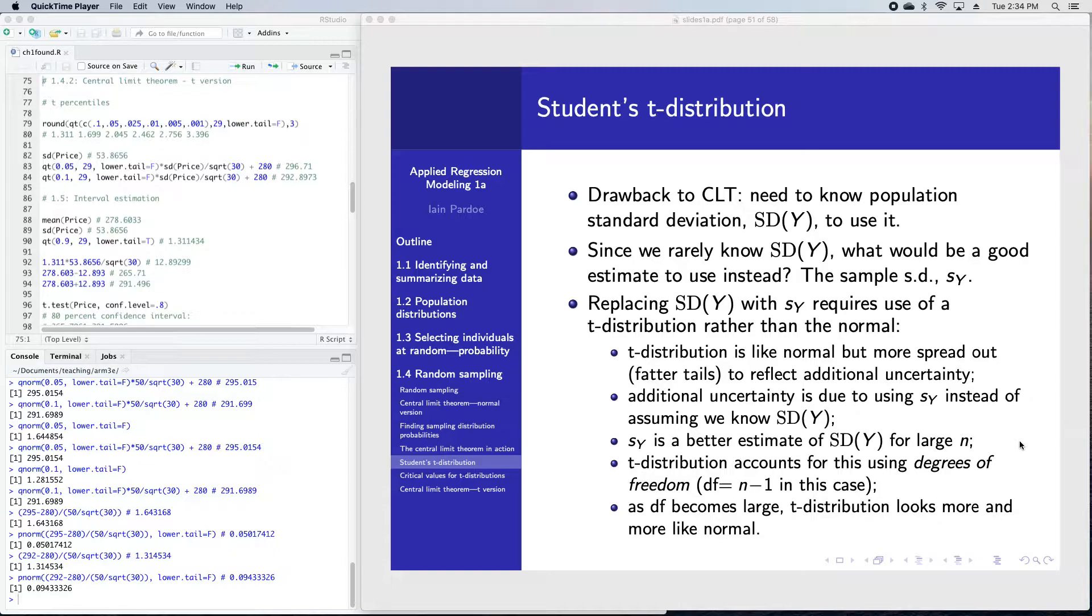The way that the t-distribution does this is it uses the sample size n and calculates something called the degrees of freedom, which in this case has the formula n minus one. So just take the sample size, subtract one, that's your degrees of freedom.